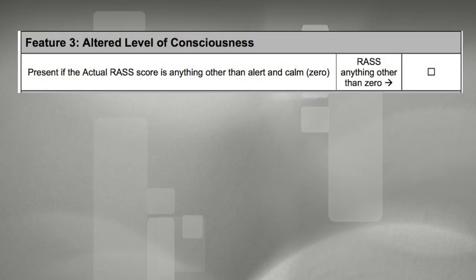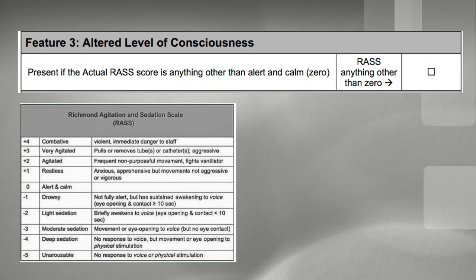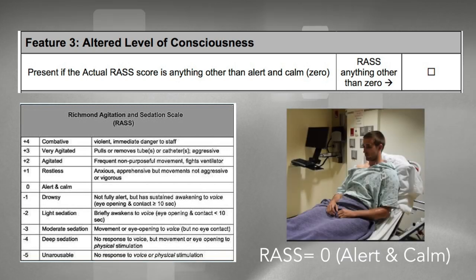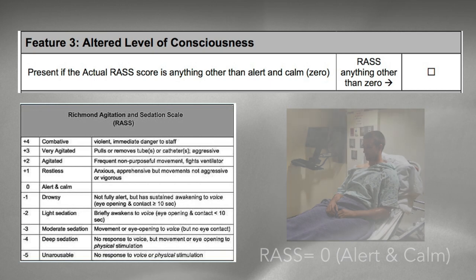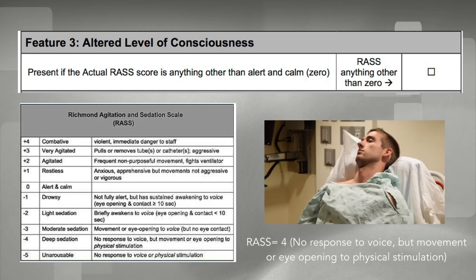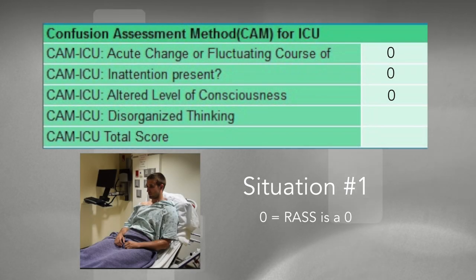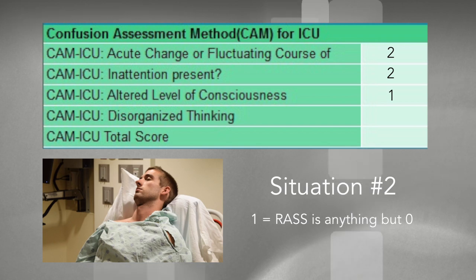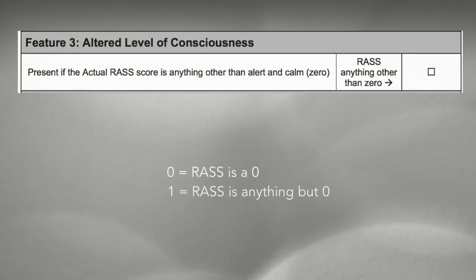For altered level of consciousness, the RN will assess whether the patient falls under any number on the RAS scale other than 0. Patient 1 receives a 0 because his RAS is 0. In situation 2, the patient would score a 1 because his RAS was anything but 0. In this category, the patient will either score a 0 for passing or a 1 for not passing.